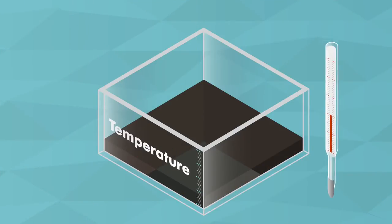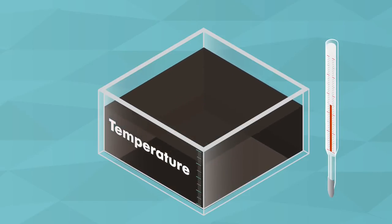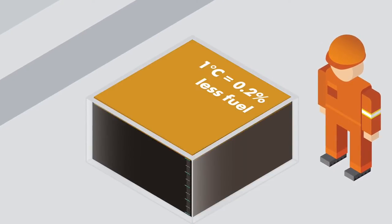Another way to manipulate the density is by increasing the temperature of the fuel oil during the bunker operation. When using volume-based measuring systems, each 1 degree of change in temperature means you get approximately 0.2% less fuel.